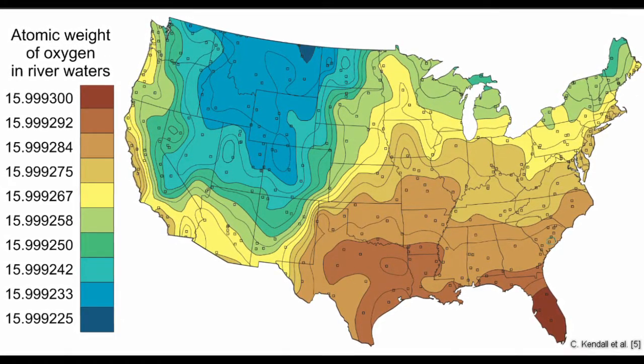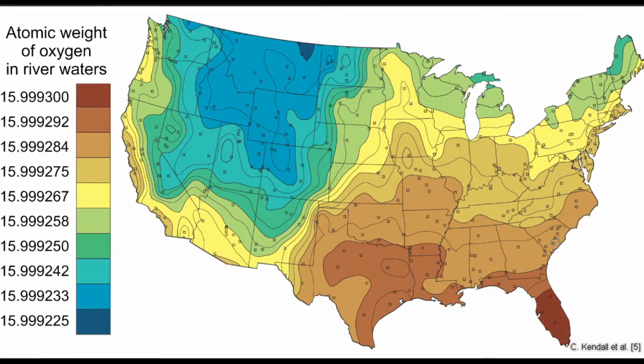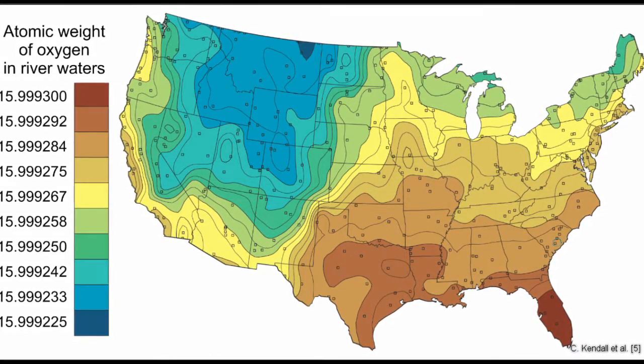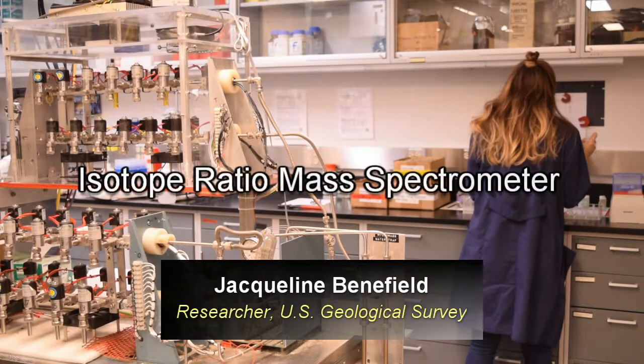To measure isotopic abundances and thus determine atomic weights in gases, solids, and liquids, we use an isotope ratio mass spectrometer.